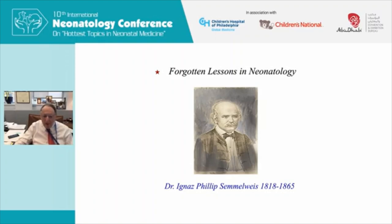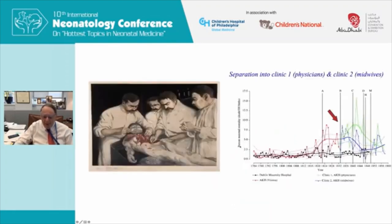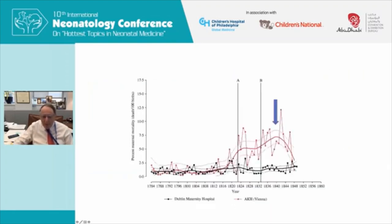He grew up in Budapest but had moved to Vienna for training. When he arrived in the 1840s, he looked at the mortality rate of women in childbirth, which was between five and ten percent, and compared it to a hospital in Dublin where it was less than two percent, and he became frightened.